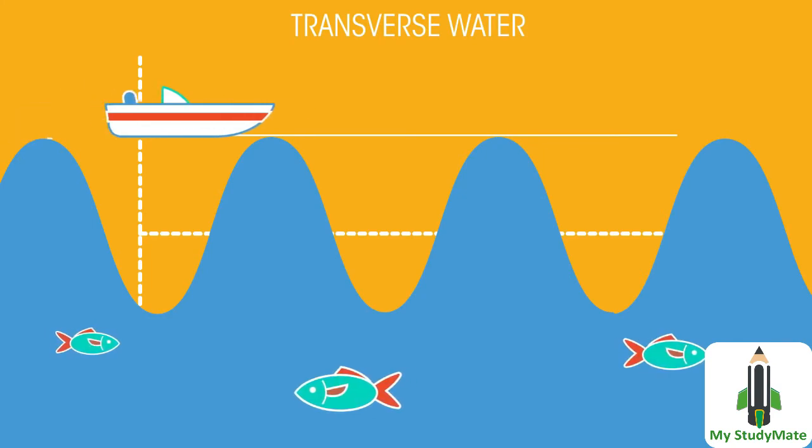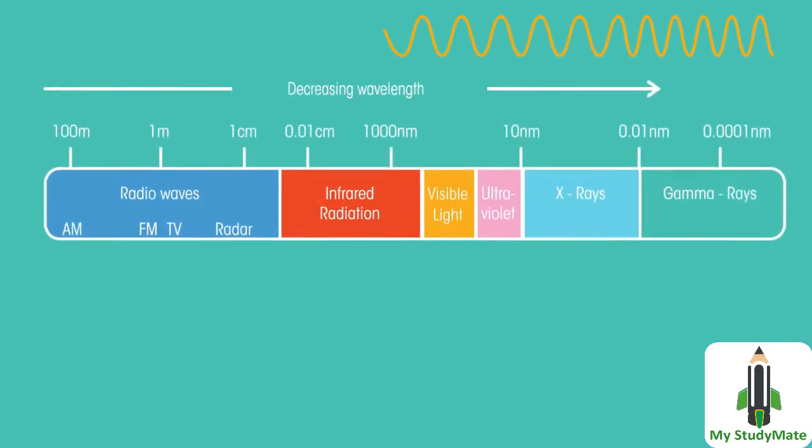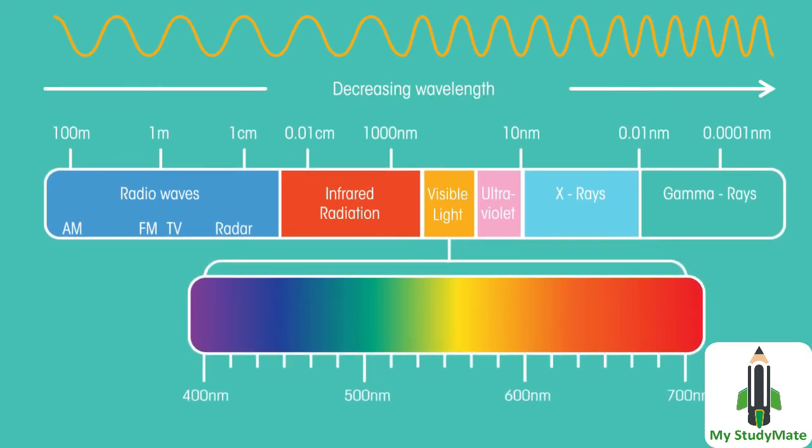The waves on the surface of water are transverse waves. They make the water surface go up and down. All types of electromagnetic waves like visible light are also transverse waves.